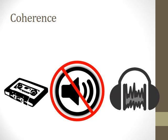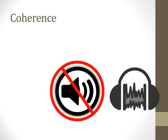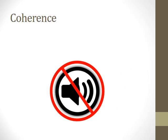The first principle is coherence: delete extraneous words, graphics, and sounds. When sounds that are interesting yet not essential are introduced, they increase cognitive load. In other words, the learner's finite capacity for essential information is reduced. Some examples of this might be transition sounds or background music during the presentation of material to be learned.